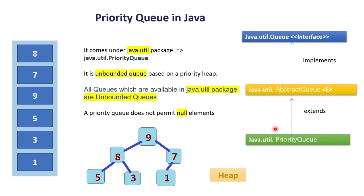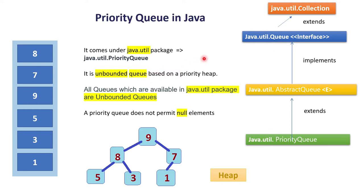Looking at its hierarchy, java.util.PriorityQueue extends java.util.AbstractQueue, which implements the java.util.Queue interface, and this Queue extends the java.util.Collection interface. Another important point is that it is an unbounded queue based on a priority heap. Unbounded means it is not bounded by capacity — we do not specify the size of the queue. Generally, all queues in the java.util package are unbounded in nature.